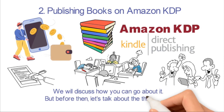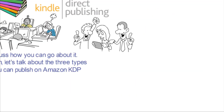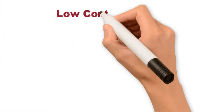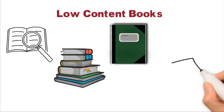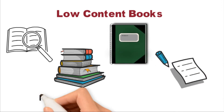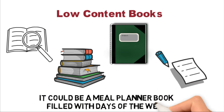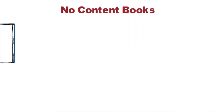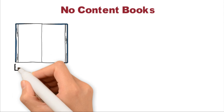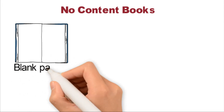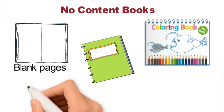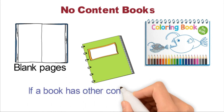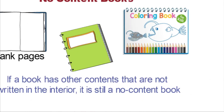Let's talk about the three types of books you can publish on Amazon KDP. Low Content Books are books with few written words, unlike typical books with full contents. An example could be a journal with inspirational quotes on each page or a meal planner book filled with days of the week. No Content Books are books with no written content in the interior — a typical example is a journal with blank pages or coloring books. Even if a book has non-written interior content, it is still a no content book.